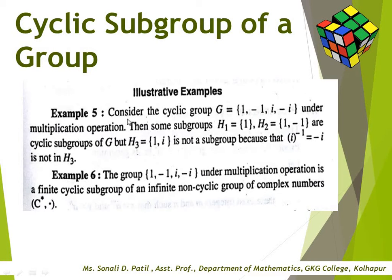Examples of cyclic subgroups: consider the cyclic group G = {1, -1, i, -i} under multiplication. Then H₁ = {1} and H₂ = {1, -1} are cyclic subgroups of G, but H₃ = {1, i} is not a subgroup because i⁻¹ = -i is not in H₃. Also, the group {1, -1, i, -i} under multiplication is a finite cyclic subgroup of the infinite non-cyclic group C* under multiplication.